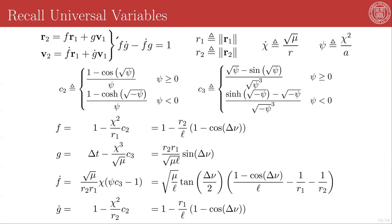Next, we can use this previously defined relationship between the f and g functions, f g dot minus f dot g is equal to 1, and that allows us to write f dot is equal to f g dot minus 1 over g, which in terms of y and A is the same as 1 minus y over r1 times 1 minus y over r2 minus 1 over A times the square root of y over mu.